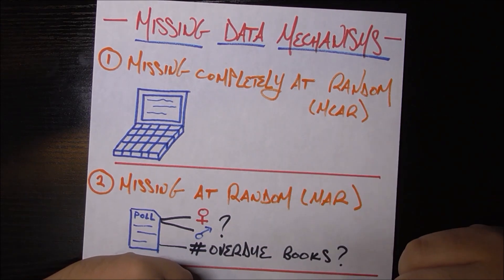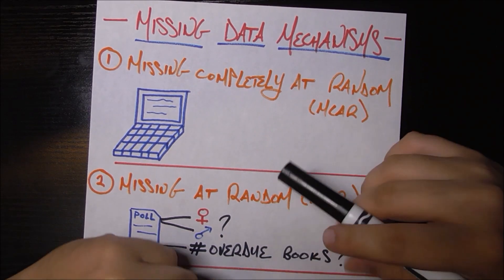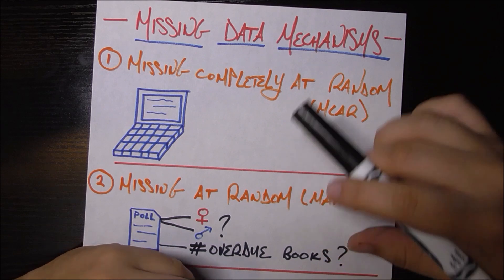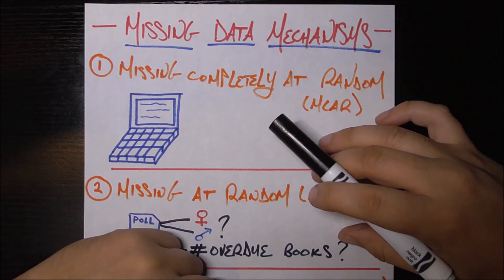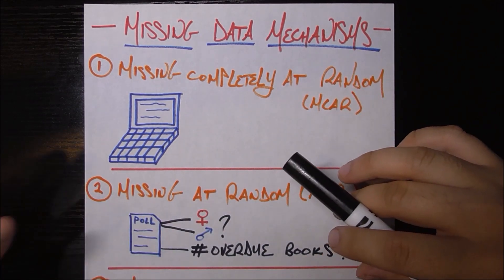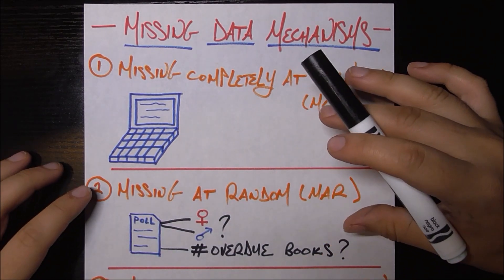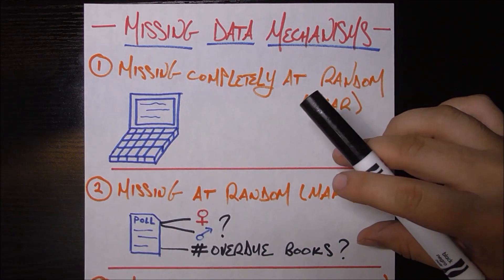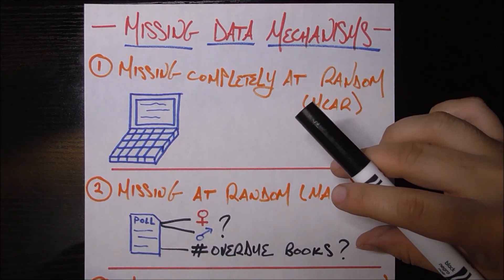The reason I think missing data is so interesting is because it's so applicable to real data sets you're going to use when you're doing any kind of data science. When you get away from those clean, perfectly tuned data sets that have every value filled in, you're going to get cases where some or all of your columns have missing data, and it's important to know how to deal with them.